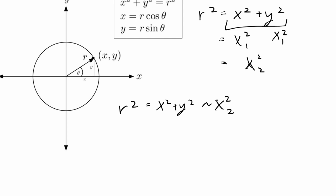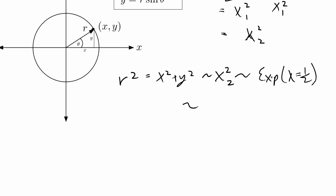A chi-squared distribution with degrees of freedom 2 can be equivalently transformed to other distributions, as proven in the research literature — I'll put a link in the description. Specifically, chi-squared with df=2 equals an exponential distribution with lambda equal to one-half. And an exponential(1/2) can be expressed as negative 2 times the natural log of a uniform random variable u1, where u1 ~ Uniform(0,1). So R² is distributed as negative 2 log(u1).